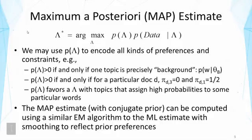Basically, it's to maximize the posterior distribution probability, which is a combination of the likelihood of the data and the prior. What would happen is that we get an estimate that listens to the data and also listens to our prior preferences. We can use this prior, denoted as P of lambda, to encode all kinds of preferences and constraints.